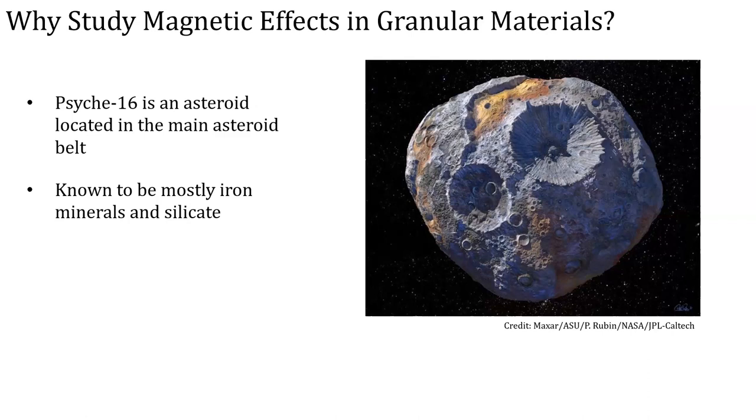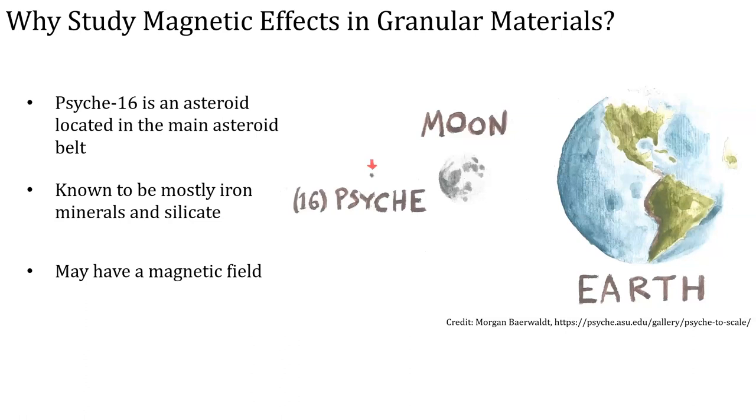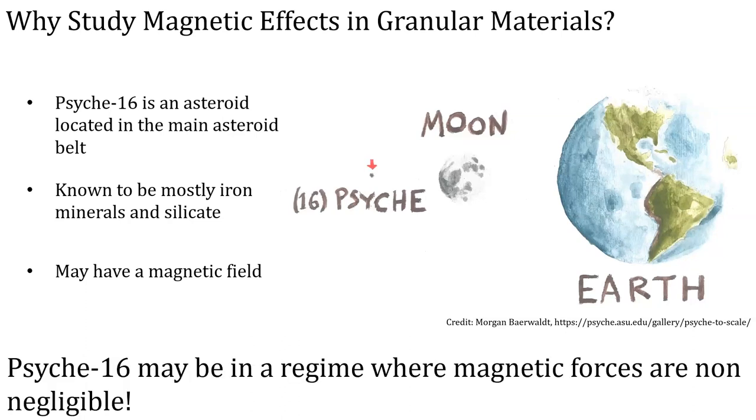And what is interesting about Psyche is that, based on some theories we have about how it may have formed, it may have its own magnetic field. And recalling that Psyche is much, much smaller than the Earth, this means that Psyche may be in a regime where the magnetic forces are sufficiently strong that they may have non-negligible effects compared to gravitational forces. And so we may see characteristically different structures on Psyche than we do on other asteroids or on other bodies due to these magnetic forces.